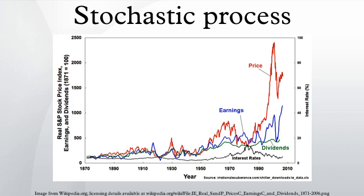In the simple case of discrete time, as opposed to continuous time, a stochastic process involves a sequence of random variables and the time series associated with these random variables. Another basic type of a stochastic process is a random field, whose domain is a region of space — in other words, a random function whose arguments are drawn from a range of continuously changing values. One approach to stochastic processes treats them as functions of one or several deterministic arguments whose values are random variables, non-deterministic quantities which have certain probability distributions.